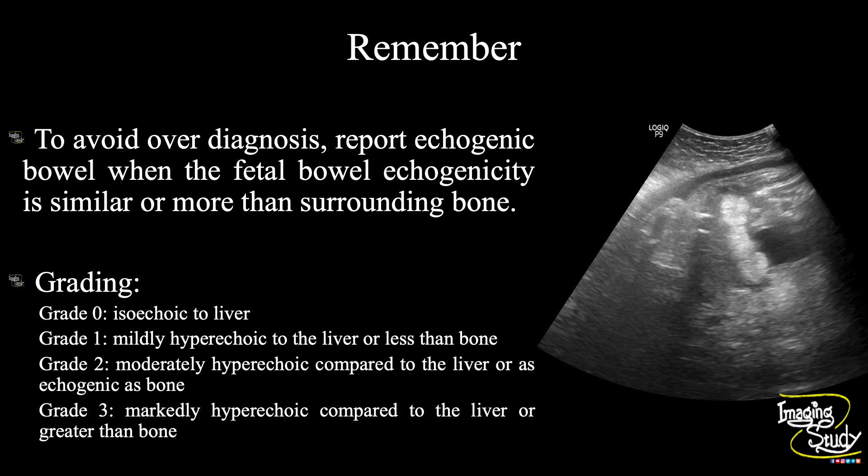In grade 0, the echogenicity of the bowel is isoechoic to the liver. In grade 1, it is mildly hyperechogenic to the liver but still less echogenic than bone. In grade 2, the echogenicity is moderately increased compared to the liver, or almost the same as bone. In grade 3, the echogenicity is more than both the liver and the bone.